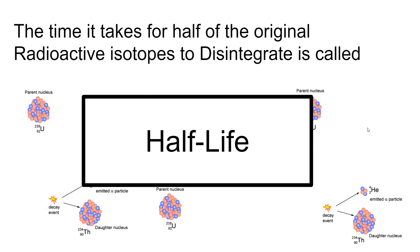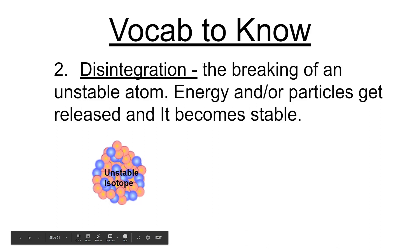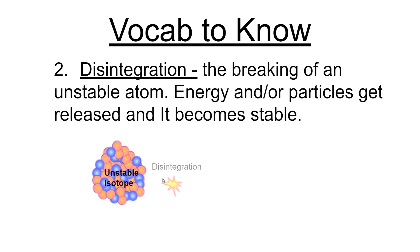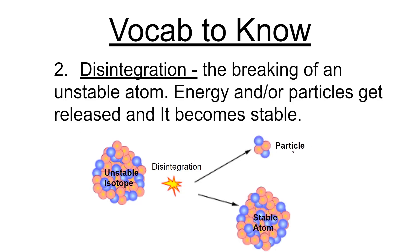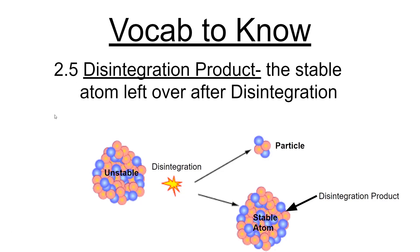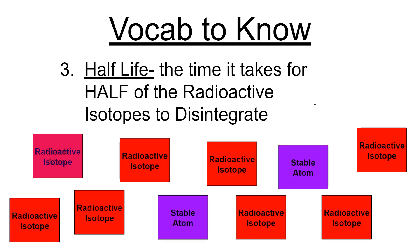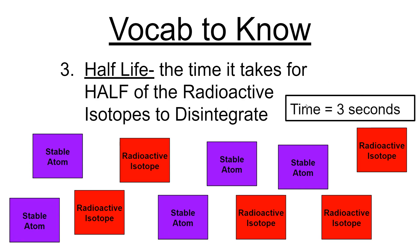Let's go over some vocabulary. The radioactive isotope is an unstable atom within a mineral that disintegrates over time. The disintegration itself is the breaking of the unstable atom — energy and particles get released and a stable atom forms. The disintegration product is the stable atom that's left over. The half-life is the time it takes for half of the radioactive isotopes to disintegrate — for example, 5 out of 10 isotopes; the time it took for that to happen is called the half-life.